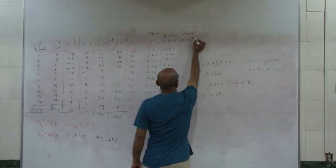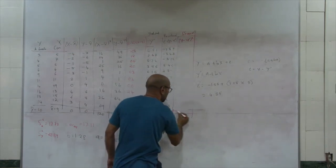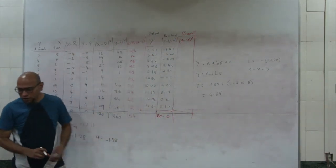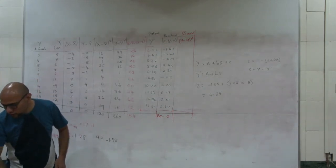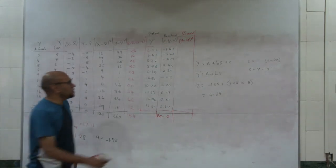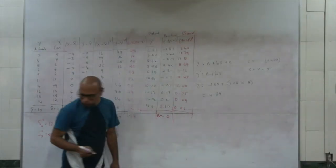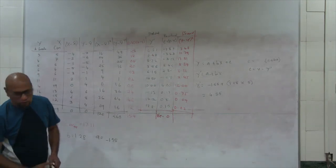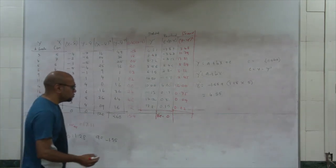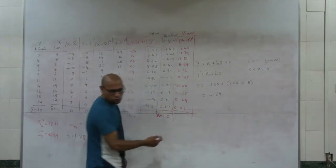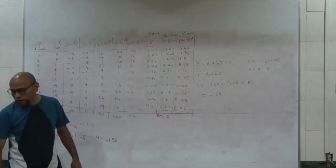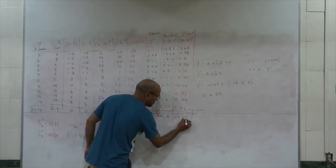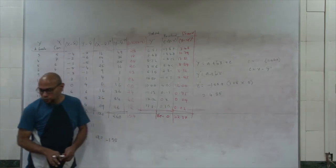We are computing the sum of squares residual using this column. These are the squares of e — all values become positive. The values are 3.48, 11.79, and so on. So sigma-e-squared, or the sum of squares residual, totals 62.37.